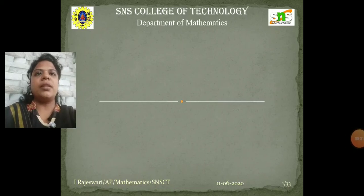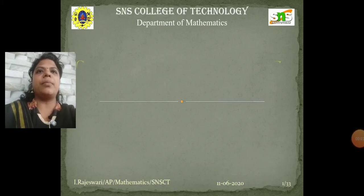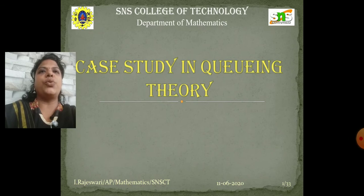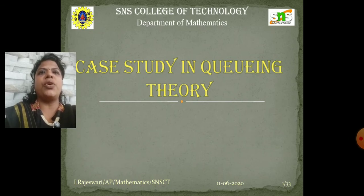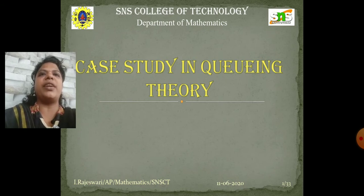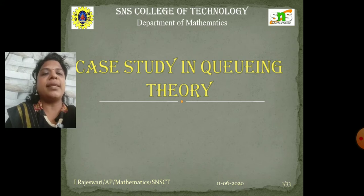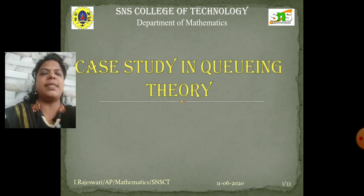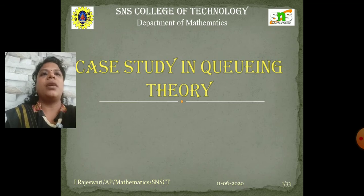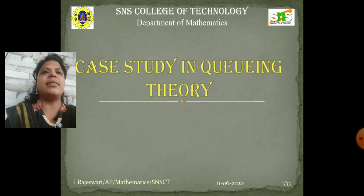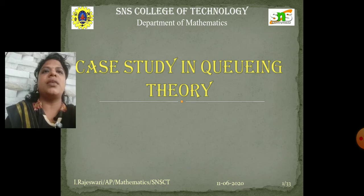Hi everyone. Let us look at the topic of case study in queuing theory. First, we should know what queuing theory is. Queuing theory is the mathematical study of waiting lines or queues. In queuing theory, a model is constructed so that queue length and waiting times can be predicted. Queuing theory is generally considered a branch of operations research because the results are often used when making business decisions about the resources needed to provide a service.